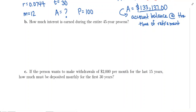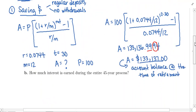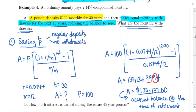In part B, we're trying to figure out how much interest is earned during the entire 45-year process. If you go back up to part A, think about what transpired. This person spent the first 30 years saving for retirement, making monthly contributions of $100 into their retirement account. The money grew through these regular deposits and through the accrual of interest.